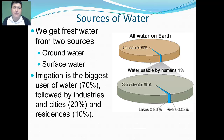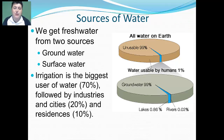We get our fresh water basically from two major sources: our groundwater and our surface water. Groundwater is going to be our primary source, making up about 99% of the water that we use. Surface water from lakes, rivers, and reservoirs would take up the rest of that.